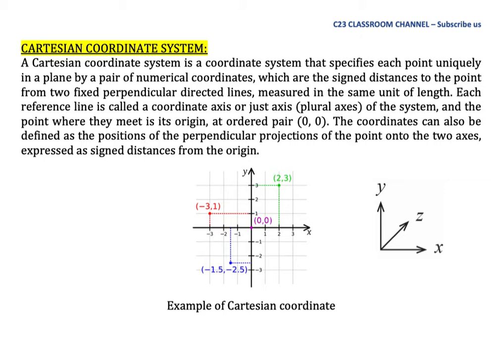Each reference line is called a coordinate axis or just axis of the system, and the point where they meet is its origin at ordered pair (0, 0). The coordinates can also be defined as the position of the perpendicular projection of the points onto the two axes, and sometimes three axes, expressed as signed distances from the origin.